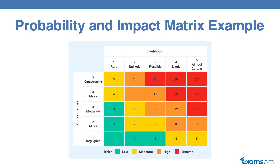Now let's take a look at an example of this matrix. Here we have a probability and impact matrix. On the rows we can see the consequences or the impact, which is ranked from one to five — from negligible, to minor, to moderate, to major, and catastrophic. On the columns we have the likelihood — how likely this risk is to occur — also ranked from one to five, with one being rare and five being almost certain.